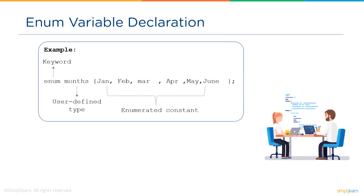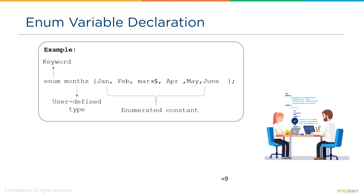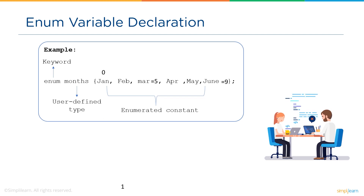Here we have month as a user-defined data type and January, February, March, April, May, and June as constants. By default the compiler will assign values to the constants, but it is also possible for the user to assign new integer values. For example, the value 5 is given to March and the value 9 is assigned to June. The compiler then automatically assigns the remaining values: Jan equals 0, Feb equals 1, April equals 6 (previous constant plus 1), and May equals 7.